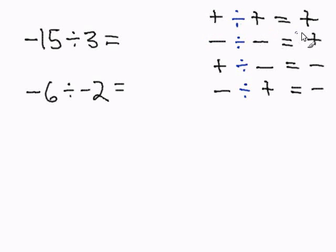When we divide two positives, we get a positive. When we divide two negatives, we get a positive. A positive divided by a negative is a negative, and a negative divided by a positive is a negative. So let's try a couple of examples.